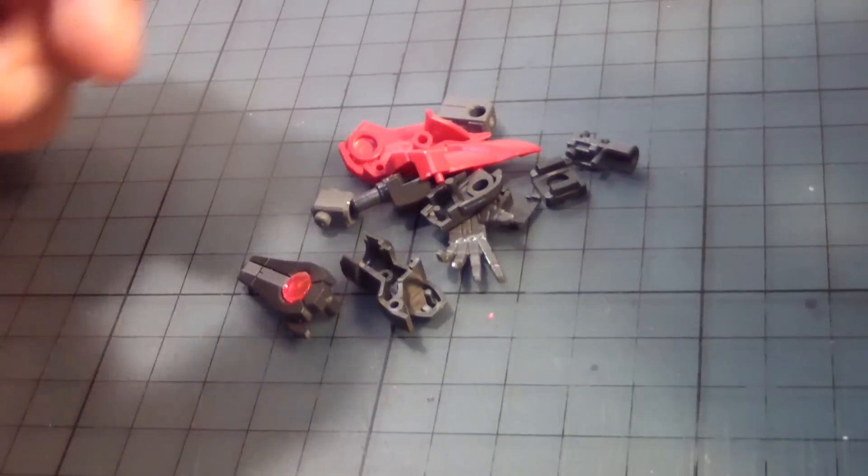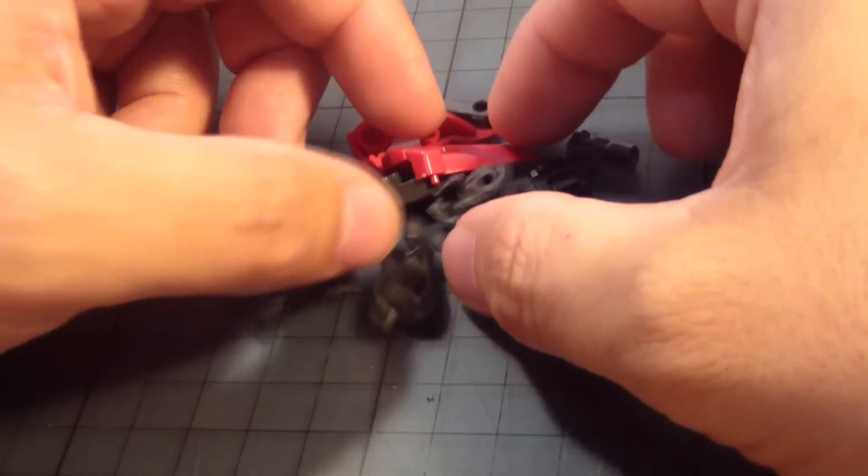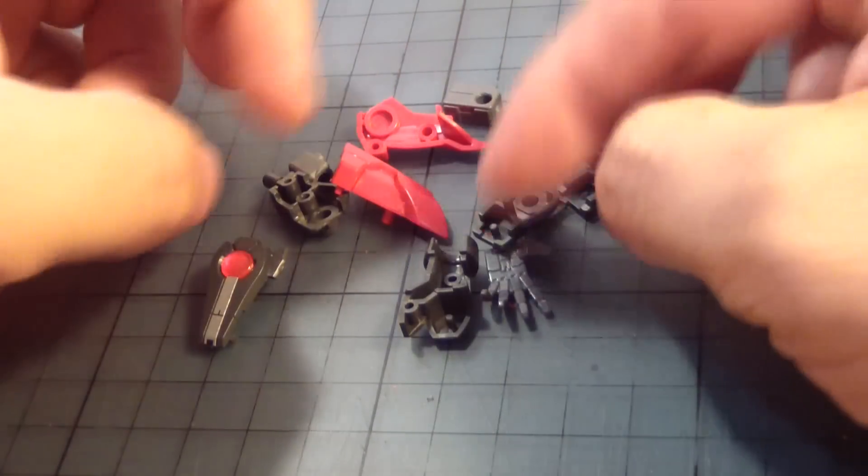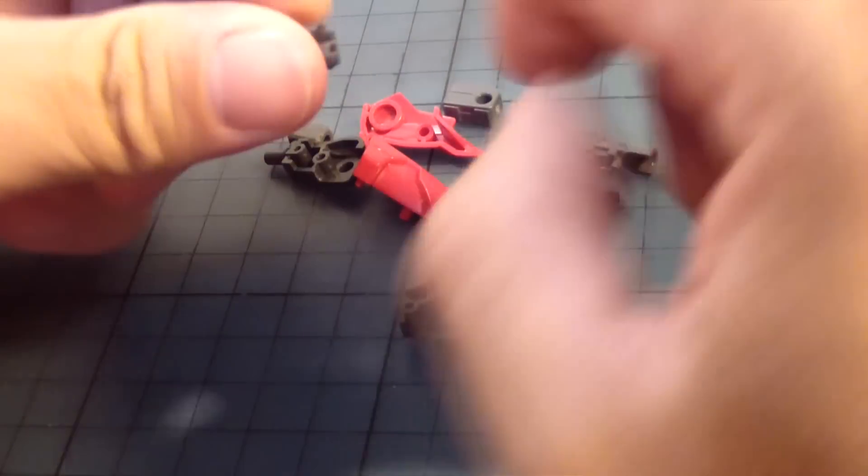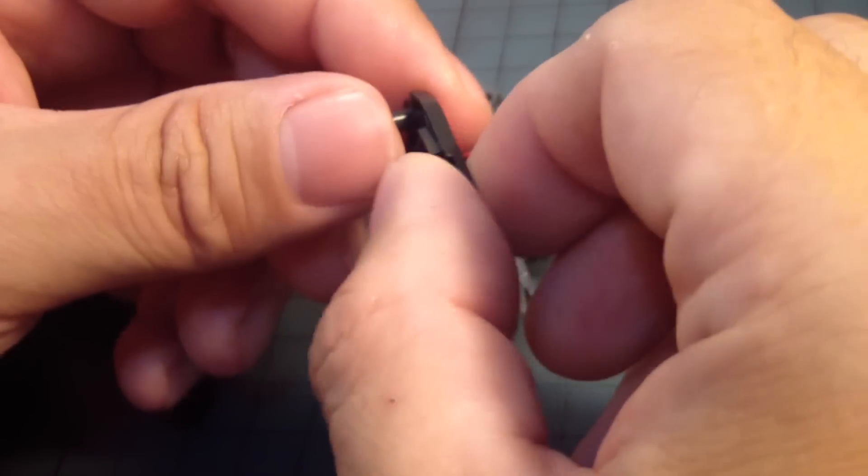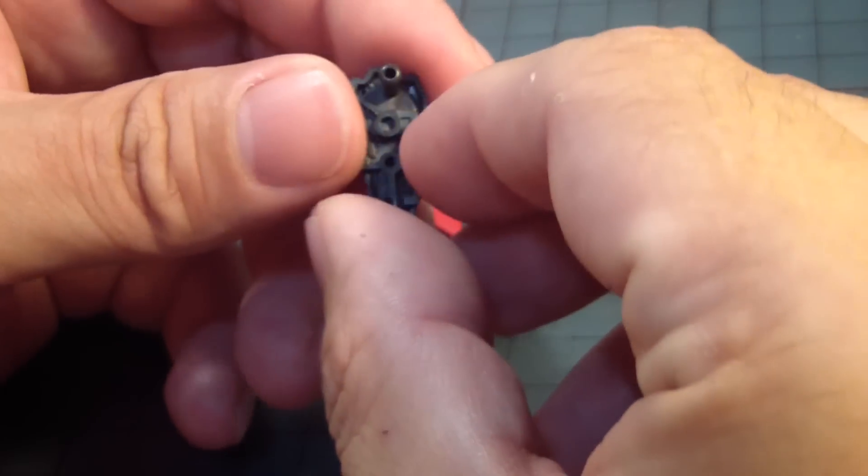All right, so the next part of the build is going to be the arms of the Dark Matter Exia. Certain parts need to be prepared, especially the actual arm itself, the forearm, and of course the jewel crystal, which I can dig in. But it's pretty simple.